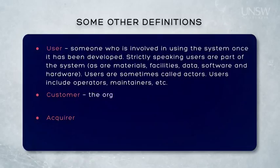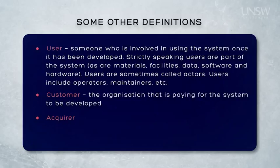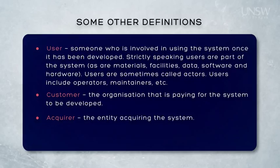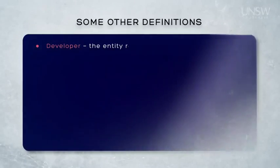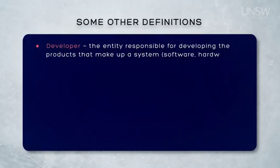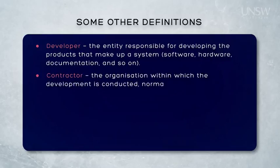Users work for the customer. The customer is the organisation that's paying for the system to be developed. Within the customer, there is an acquirer, who is the entity that's acquiring the system. Because the users are normally too busy with their operational tasks, they don't have the time or necessarily the expertise to acquire new systems. Large customer organisations will therefore most likely have a separate acquisition organisation, separate from the user organisation. And the customer is probably not big enough these days to develop the system themselves, so they'll engage with the developer. The developer is the person responsible for developing the products that make up the system — most likely part of a contractor organisation, normally under contract with the customer to do the development.